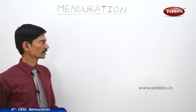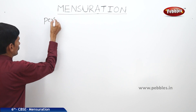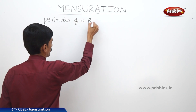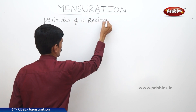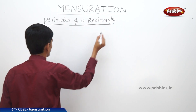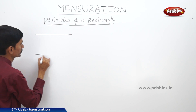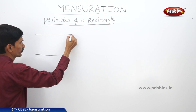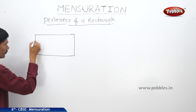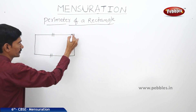Now let us find the perimeter of a rectangle. A rectangle is a quadrilateral in which both pairs of opposite sides are parallel and equal, and all four angles are right angles. So in a rectangle, the opposite sides are equal.